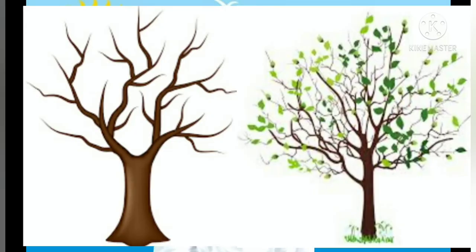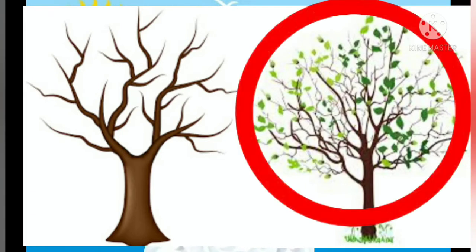Shall we do a small activity on spring season? Here there are two trees, children. Among these two trees, which tree represents the spring season? Yes, you are correct — the tree that has begun to grow leaves. Let us circle it.